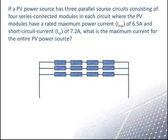A PV power source has three parallel source circuits, also called strings. Each string consists of four series connected modules where each PV module has a rated maximum power current, I-sub-MP, of 6.5 amps and a short circuit current, I-sub-SC, of 7.2 amps. What is the maximum current for the entire PV power source?